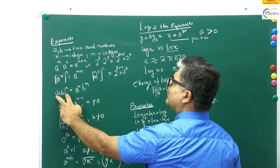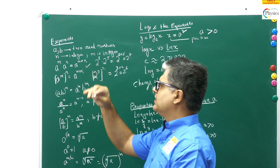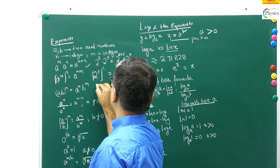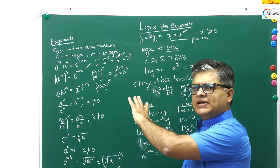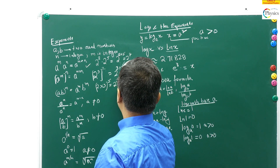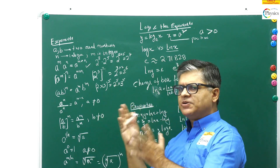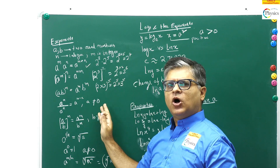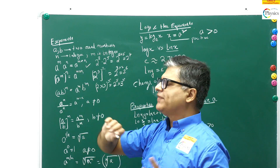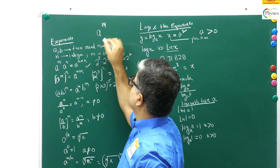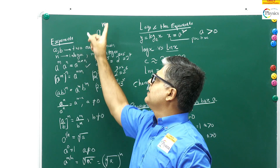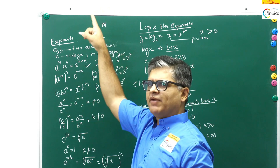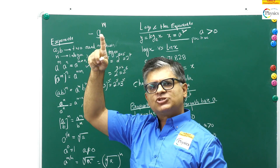The third property: if two numbers are acting as a base with the same power, you can separate them. For example, (2 × 3) raised to power 5 equals 2 raised to power 5 multiplied by 3 raised to power 5. You can separate out the base and put the appropriate power on it. Note: in the expression A raised to power M, A is the base and M is the power.